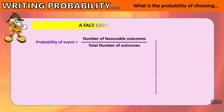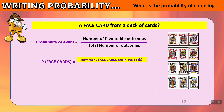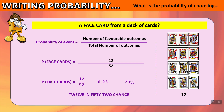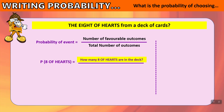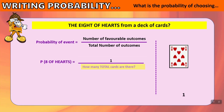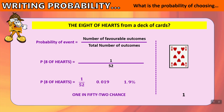What is the probability of choosing a face card? There are 12 face cards out of 52. The chance of choosing a face card is 12 out of 52, or 23% — a 12 in 52 chance. What about choosing the 8 of hearts? There is 1 eight of hearts out of 52, so the probability is 1 out of 52 — about a 1.9% chance, which is very unlikely. That's a 1 in 52 chance.